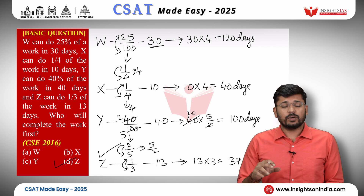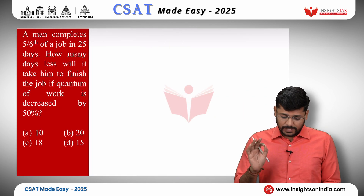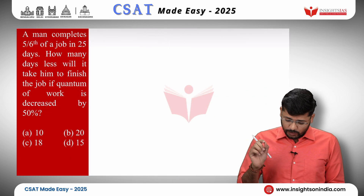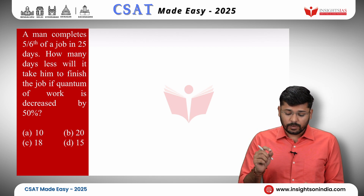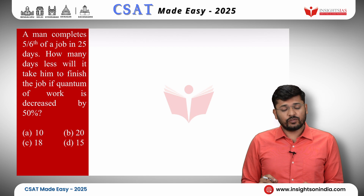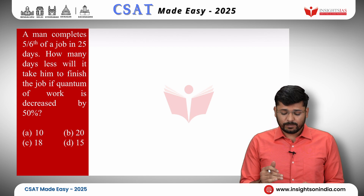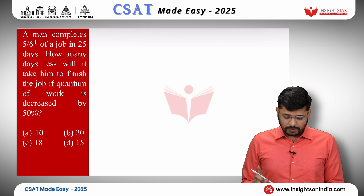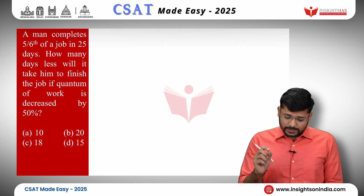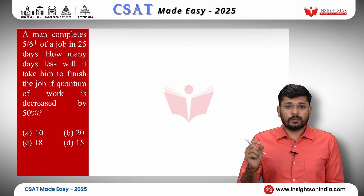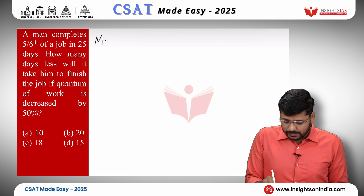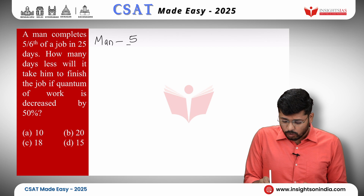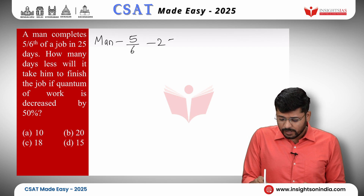We will look at another question. A man completes 5/6 of a job in 25 days. How many days less will it take him to finish the job if the quantum of the work is decreased by 50%? Here there is no comparison between different people — they are talking about only one person. He does 5/6 of the job in 25 days.